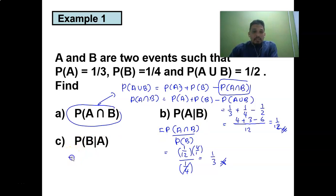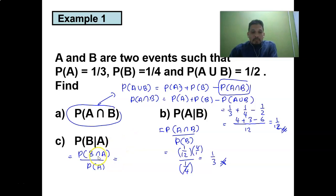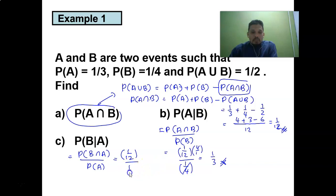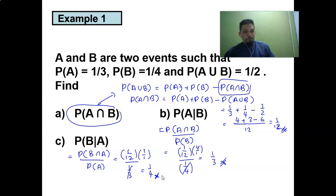For part C, probability of B given A equals probability of B intersect A divided by probability of A. Since A intersect B equals one over twelve, dividing by probability of A which is one over three gives three over twelve, which simplifies to one over four.